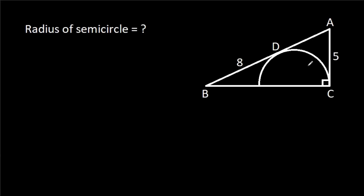In this video, we have been given a semicircle inside a right angle, where AC is 5 and BD is 8. We need to find the radius of the semicircle.